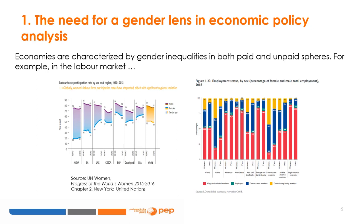In other regions, female labor force participation stagnated and in some cases, such as India and South Asia, the gender gap has widened rather than narrowed. The chart on the right shows employment status by gender in different regions of the world for 2018, adding information about the quality of women's and men's jobs. The most striking aspect relates to the proportion of women categorized as contributing family workers — women remain overrepresented in this category in all regions of the world.